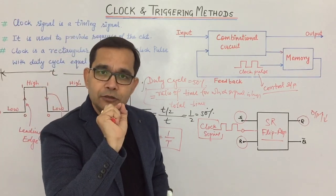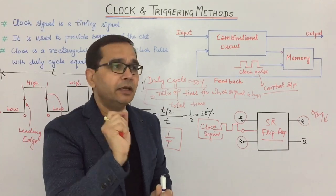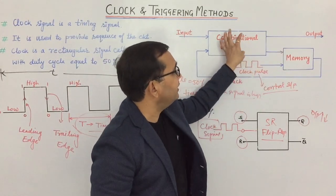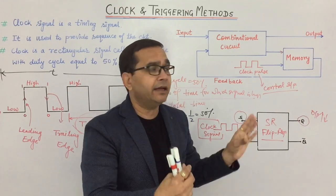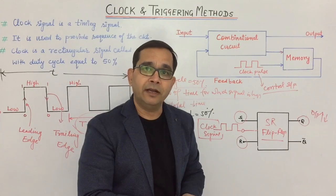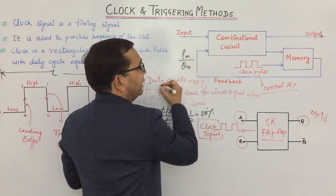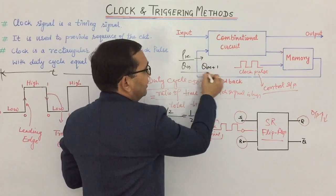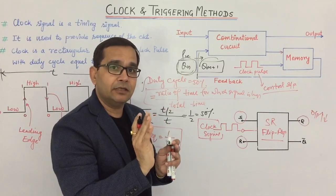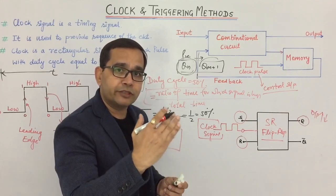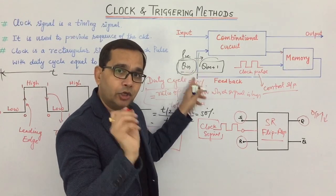Now let us see how triggering behaves when we apply a clock pulse to a flip-flop. Triggering means the state stored in the memory element changes when a clock pulse is applied. The present state is called Qn, and the state after the clock pulse is called Qn+1. We will use the terms Qn and Qn+1 in upcoming lectures.